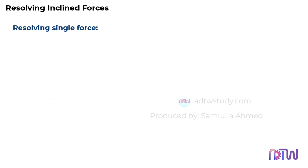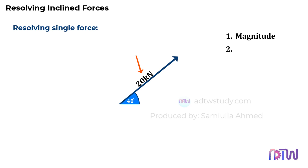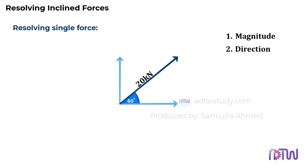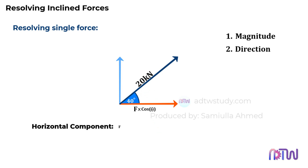Let's start with resolving a single force. Suppose a 20 kilonewtons force is acting at a 40 degree inclination as shown. To resolve the force into its components, we need two pieces of information: the magnitude of the force, which is 20 kilonewtons, and the direction of the force, which is a 40 degree inclination with the horizontal. To find the horizontal component of the force, we multiply force F with cosine theta, where theta is the angle made by the force with the horizontal. Therefore, the horizontal component Fx will be equal to 20 times the cosine of 40 degrees, which gives us 15.32 kilonewtons.